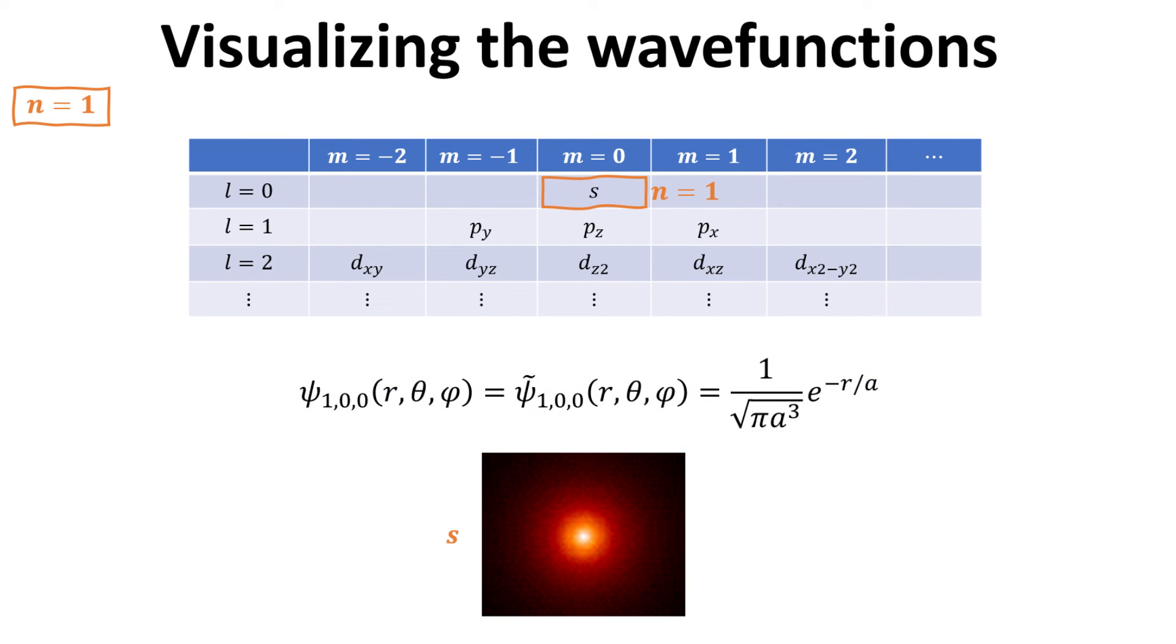Let's start with the n equals 1, which is only 1 s orbital. In this case, the complex and real wave function has exactly the same form as shown. It is maximum at the center of the atom and decays exponentially with r, as depicted in the image below.